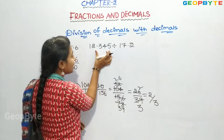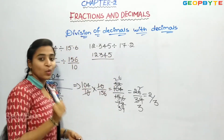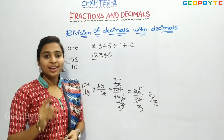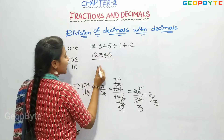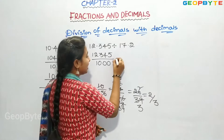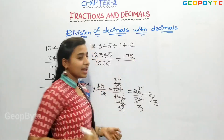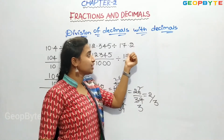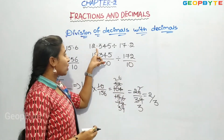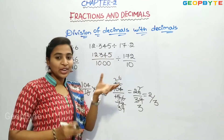So 12.345 can be written as 12345 by 1000, because after the point there are 3 digits, and that many zeros come in the denominator. Divided by 17.2, which becomes 172 by 10, as we have 1 digit after the point. Remember: however many digits are after the point, that many zeros come in the denominator.